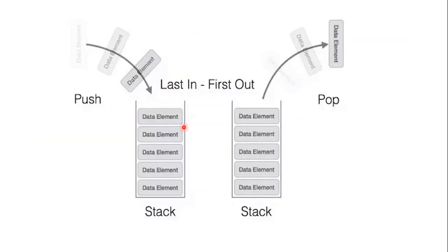Push and pop operation is based on the last-in first-out concept. Let us assume this is a stack area — the memory location where we push data and pop data. We push data elements one by one into this stack area. The data element pushed in last comes out from the stack first. That is why we say that the stack works on the last-in first-out concept.